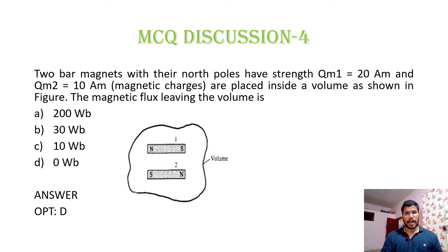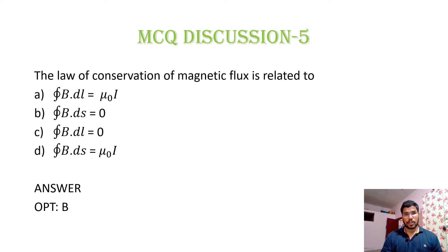MCQ 4: Two bar magnets with north poles having strength qm1 = 20 ampere-meter and qm2 = 10 ampere-meter are placed inside a volume as shown in the figure. The magnetic flux leaving the volume is: option A, 200 weber; option B, 30 weber; option C, 10 weber; option D, 0 weber. Since it is a closed volume, no net magnetic flux leaves the surface. Hence option D, 0 weber, is correct.